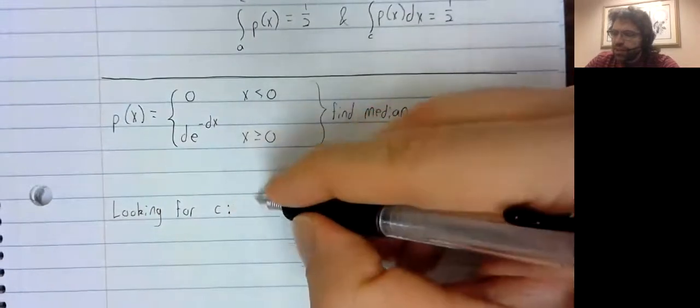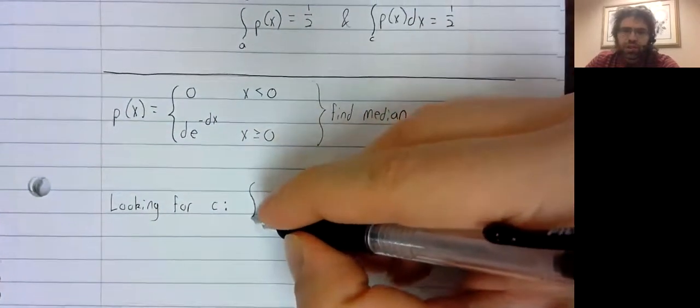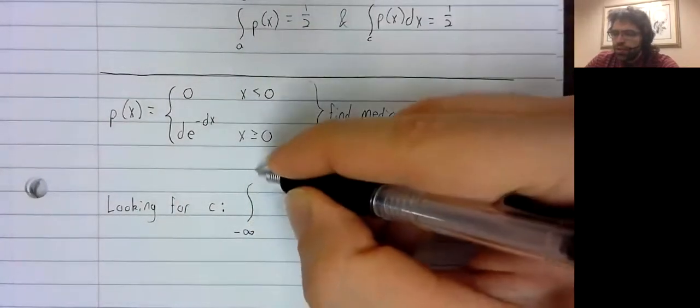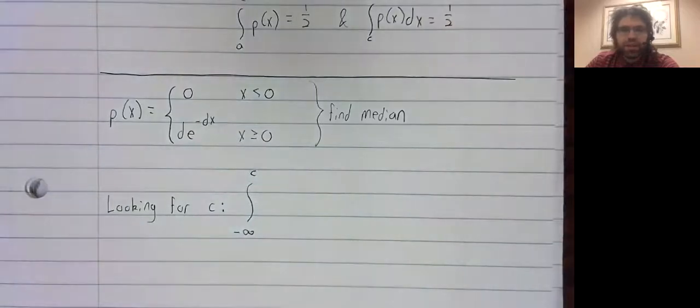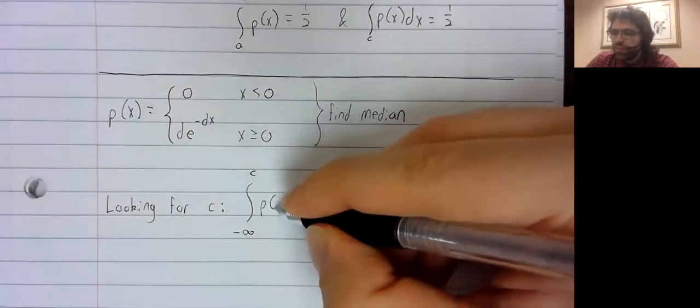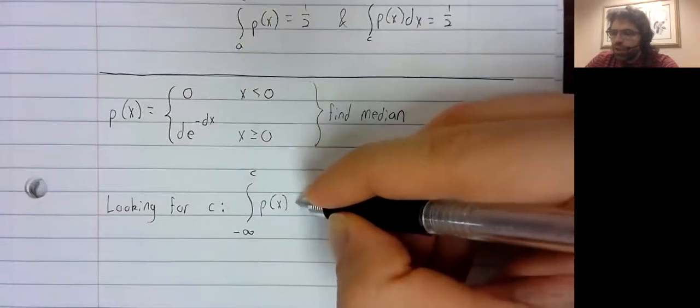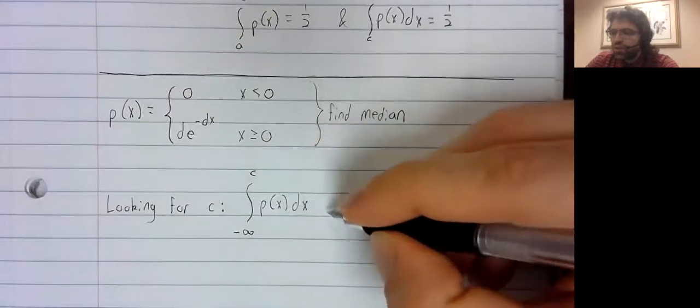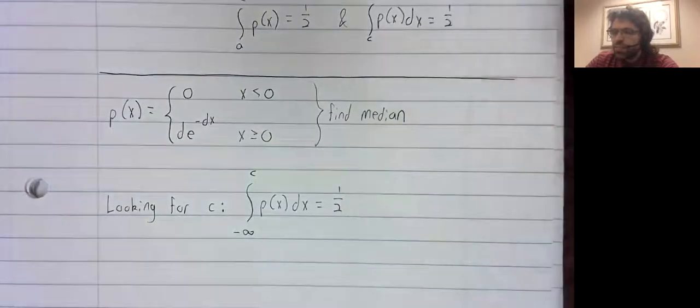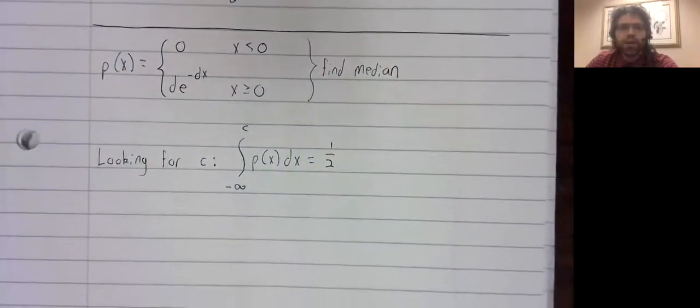which is definitely a positive number such that the integral from negative infinity to C of P of X DX equals 1/2.